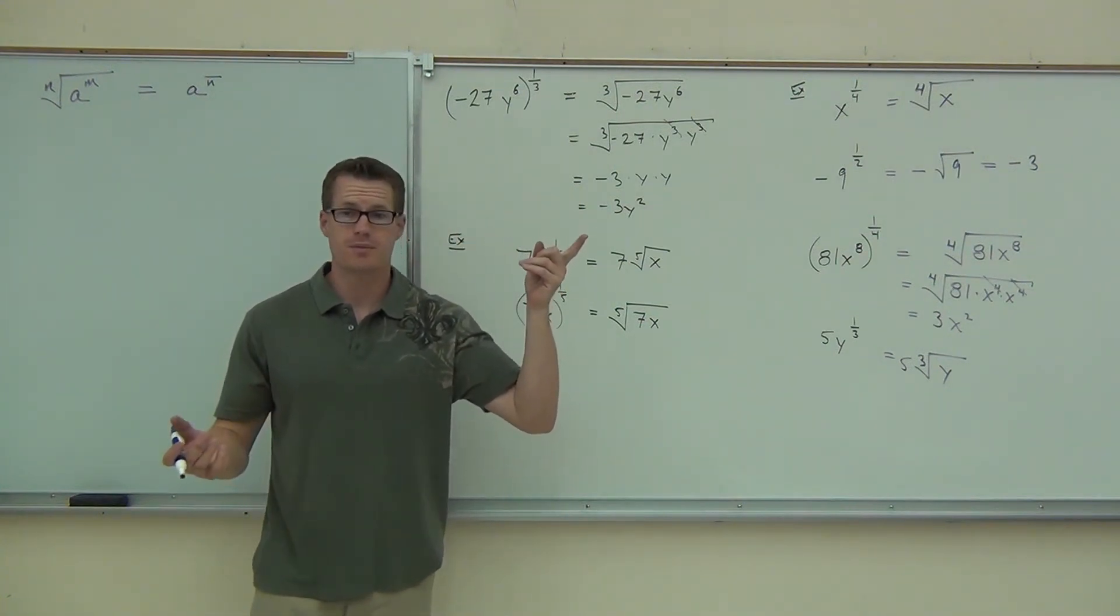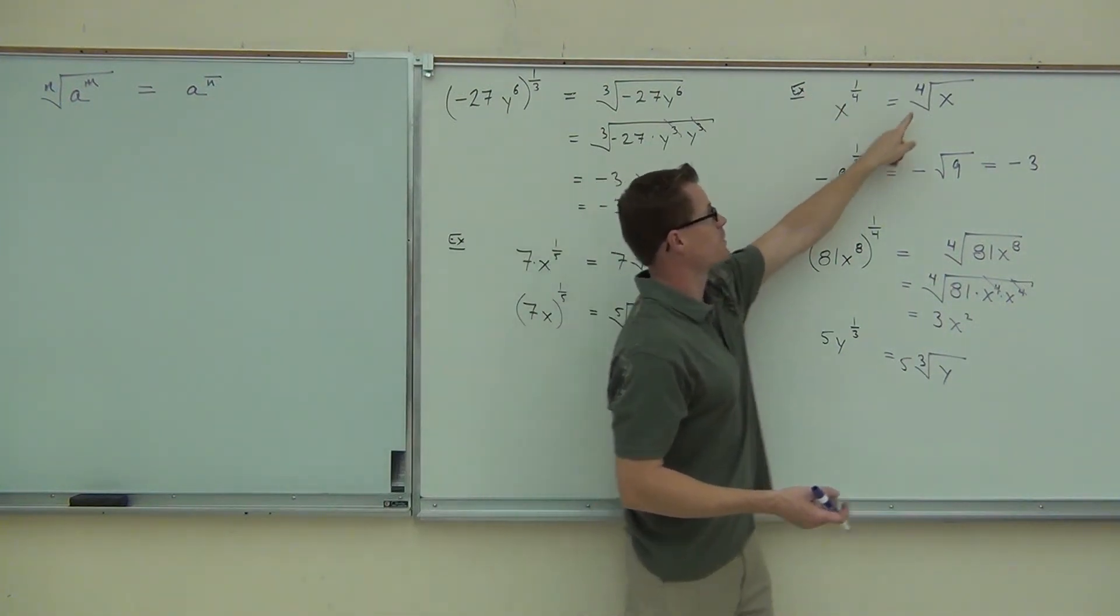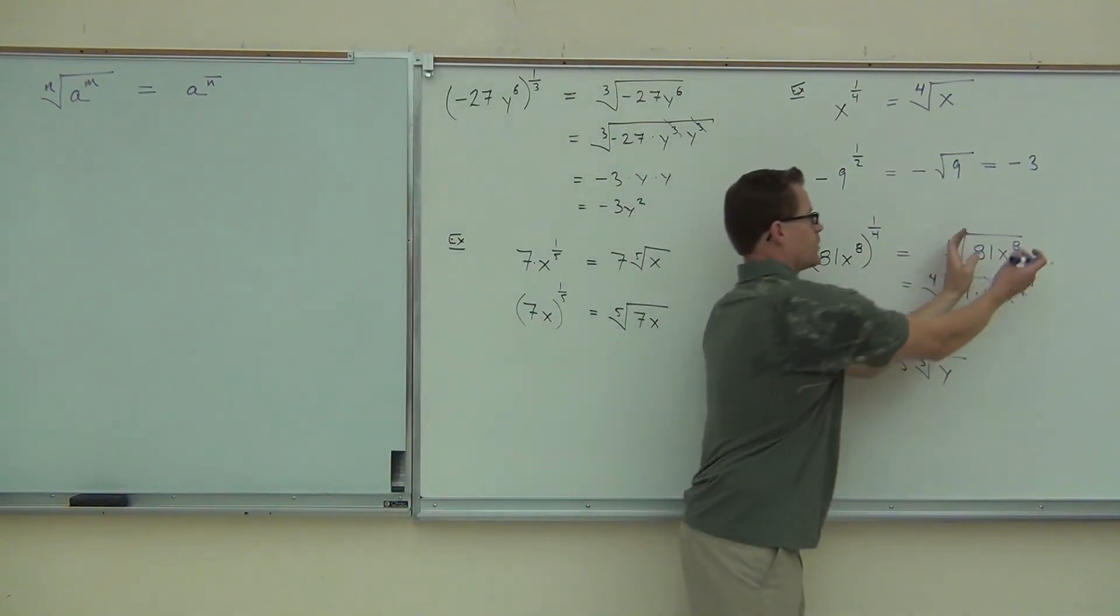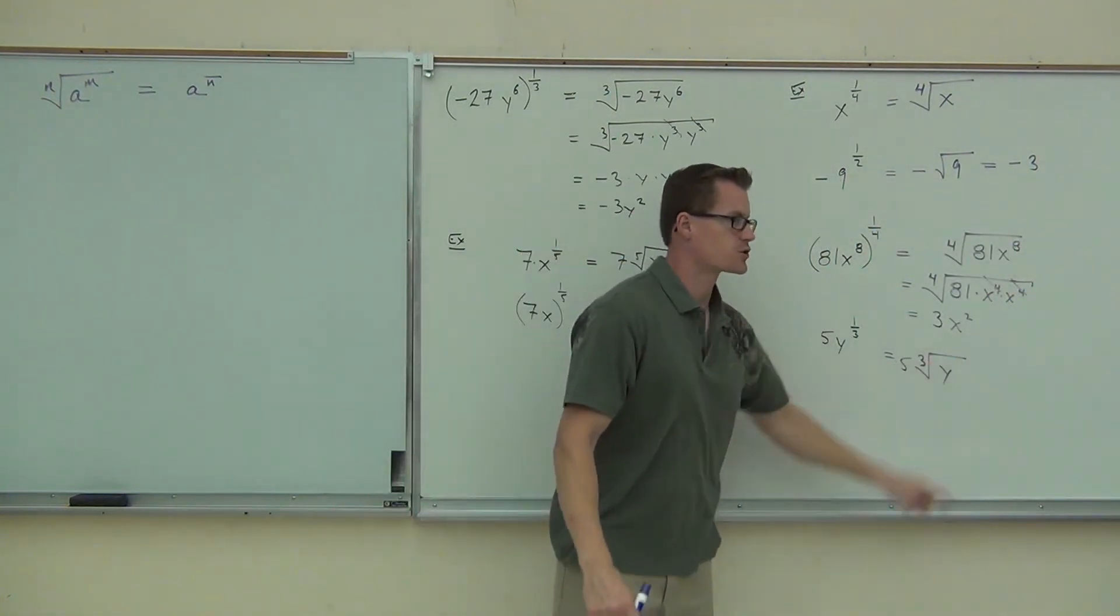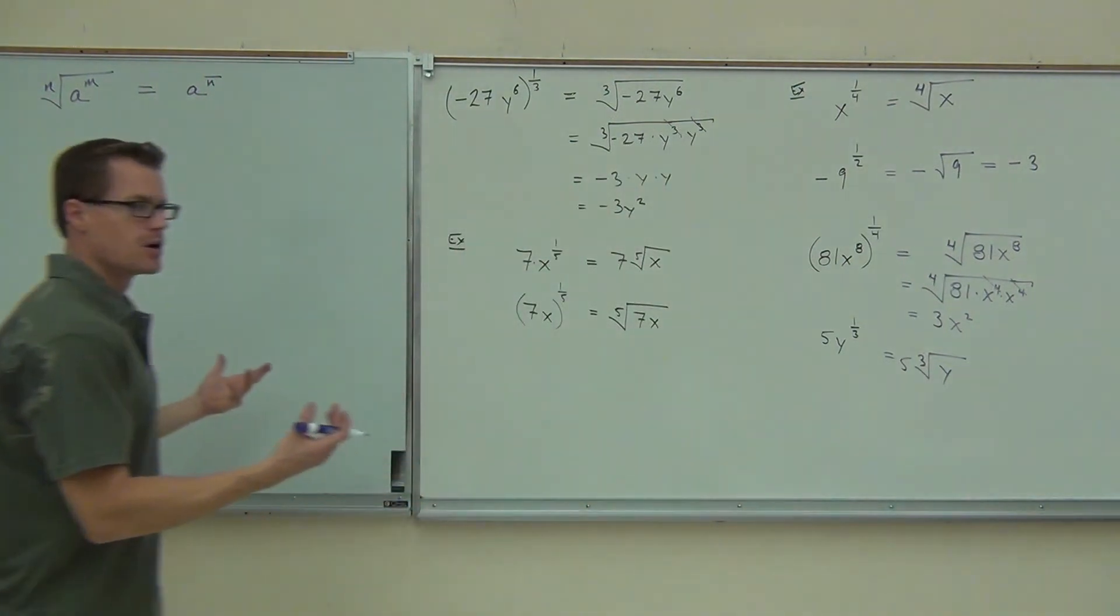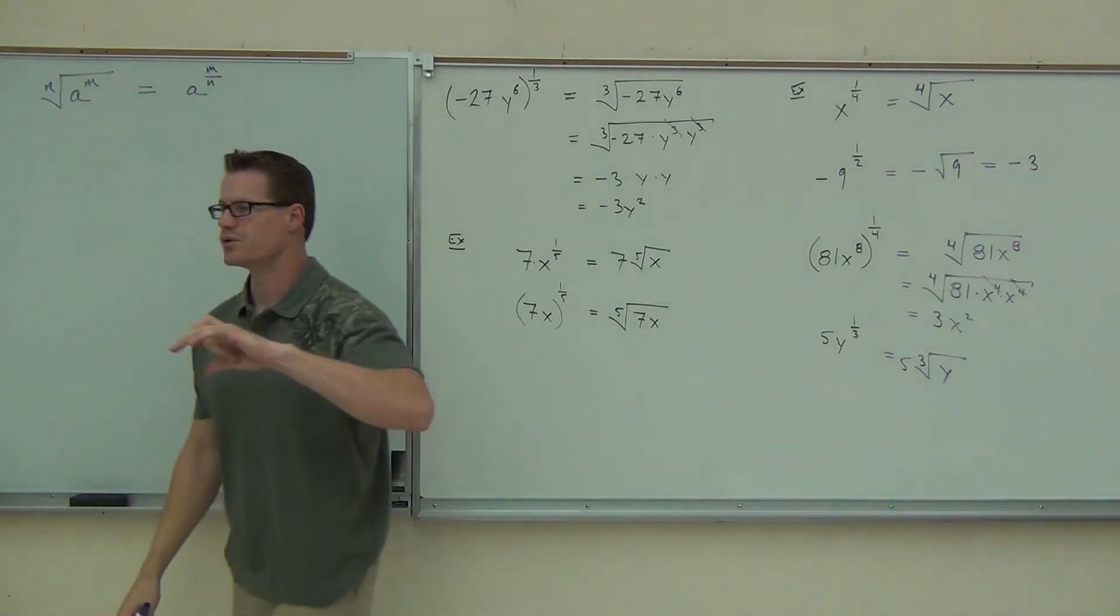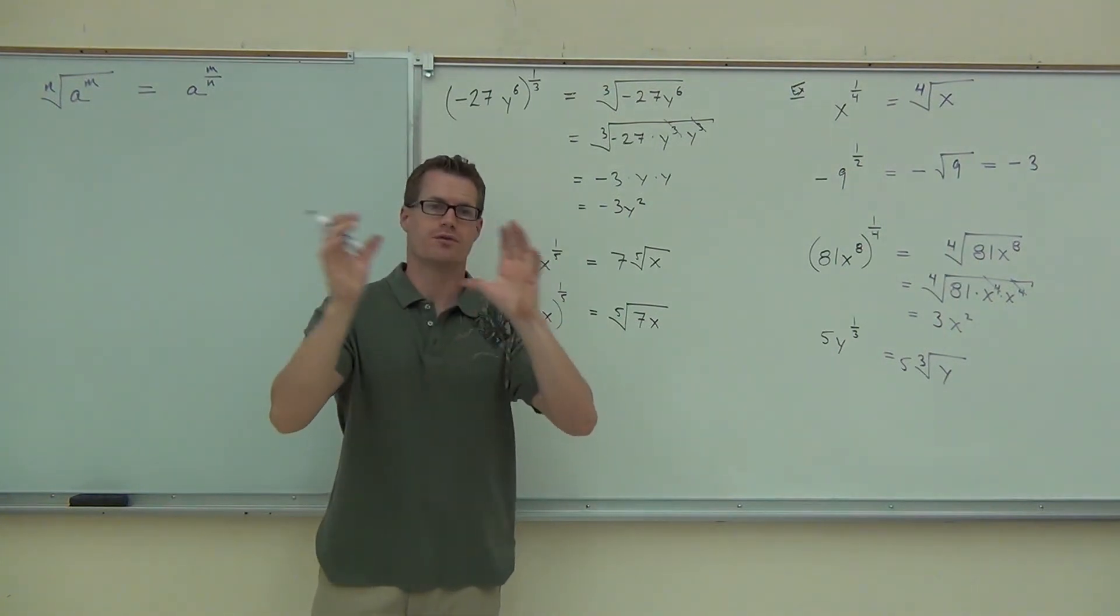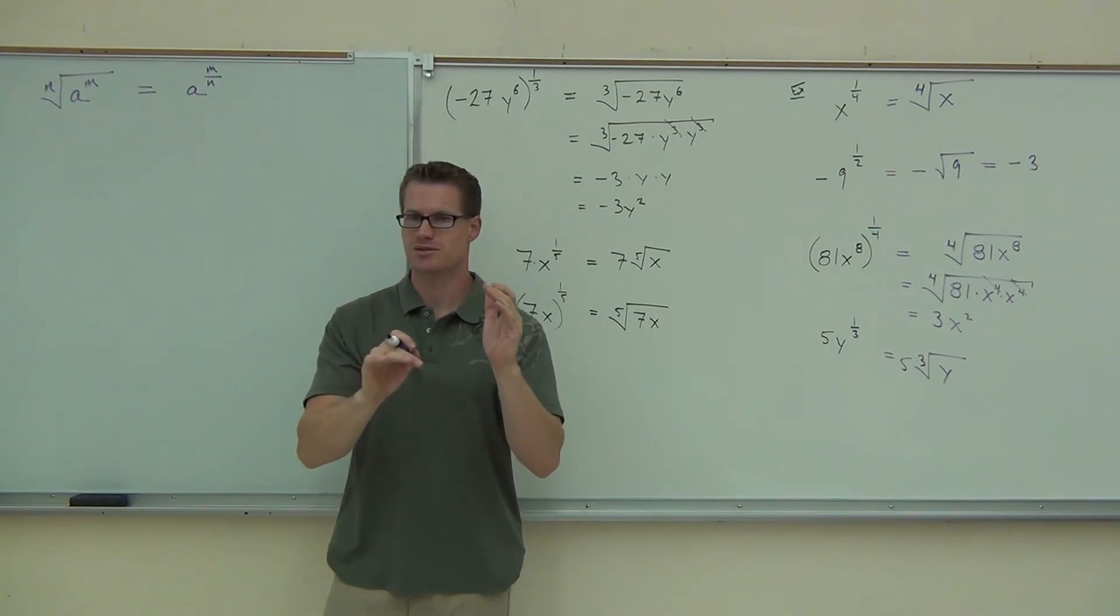Only this time, instead of having a numerator of one, what do you think we're going to have? Just m. Whatever the power is. Here, in every case, our power was one. That's why we just wrote x to the first. Nine to the first. Everything was to the first power. If I have another number besides a one up there, like an m, we just write a to the m over n. So it's power over root. You guys got to get that in your head. How we write radicals is power over root. Whatever the power is, over whatever the root is. You all need to be still okay with this. Alright. Good.